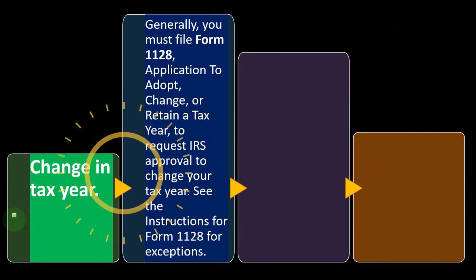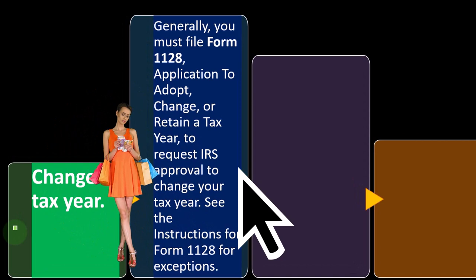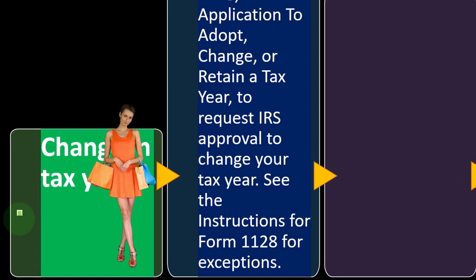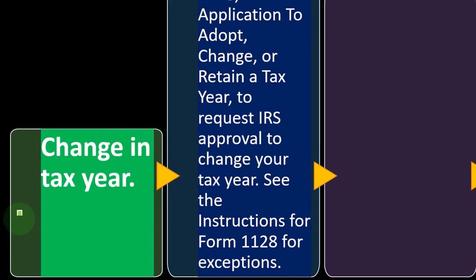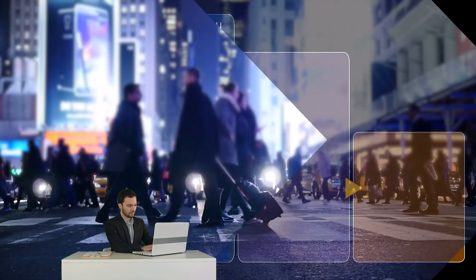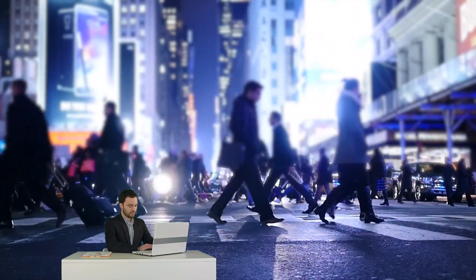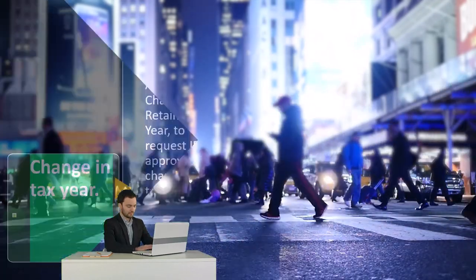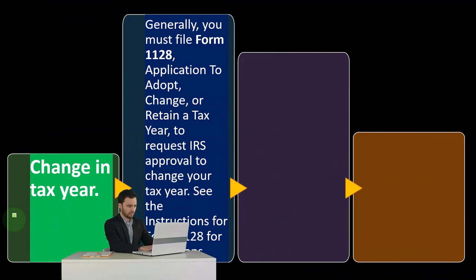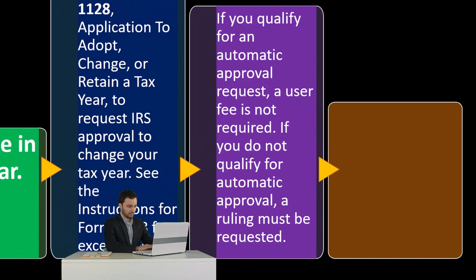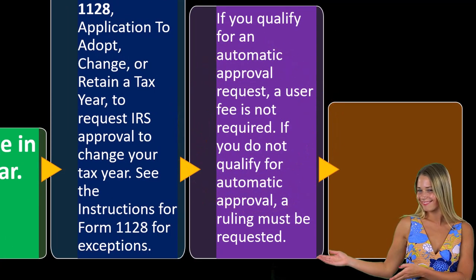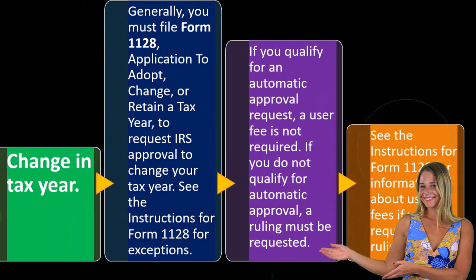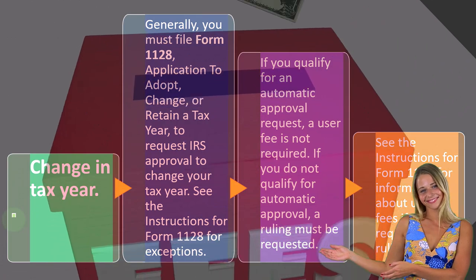Regarding a change in tax year: generally, you must file Form 1128, Application to Adopt, Change, or Retain a Tax Year, to request IRS approval to change your tax year. That's why you want to get off on the right foot when you start — you could still move forward with a change, but it's difficult. If you qualify for an automatic approval request, a user fee is not required. If you do not qualify for automatic approval, a ruling must be requested. See the instructions for Form 1128 for information about user fees if you are requesting a ruling.